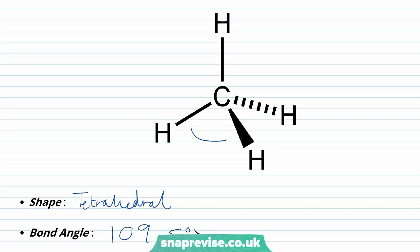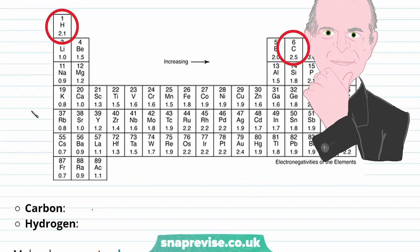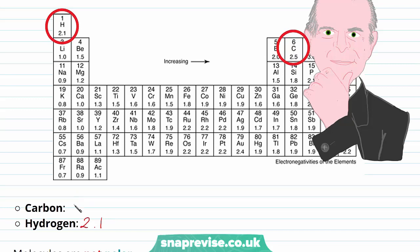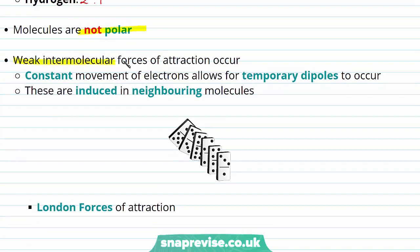Now I've looked at the bonding within our alkanes, let's have a look at the intermolecular force of attraction between the molecules. Below I have a periodic table showing the electronegativity of the elements. Carbon and hydrogen have very similar values of electronegativity — hydrogen has a value of 2.1 and carbon a value of 2.5. So because these values are so similar, our alkane molecules are not polar. Instead we have weak intermolecular forces of attraction occurring between alkane molecules. These occur because of the constant movement of electrons that allow for temporary dipoles to occur, and just like dominoes knock over their neighbour, they induce these temporary dipoles in neighbouring molecules. As a result, London forces of attraction occur.